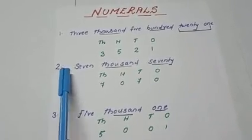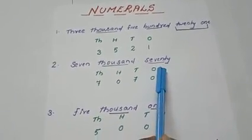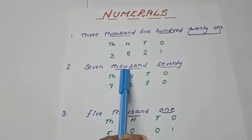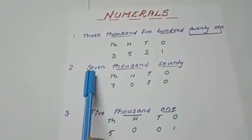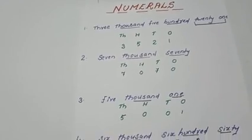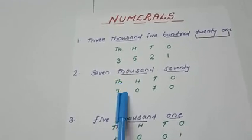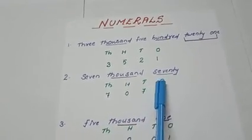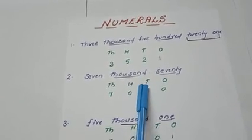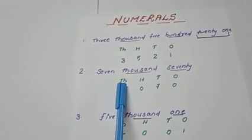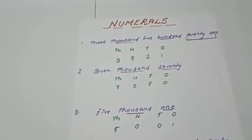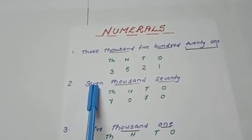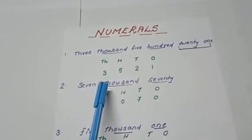Come to example number 2: seven thousand and seventy — 7070. The first place value here is 1000, which means 1000 is the highest place value of the given number name. So I will start writing the place value up to 1000 — ones place, tens place, then 100, and finally 1000. How many thousands? The answer is 7. Below the place 1000, I will write 7.